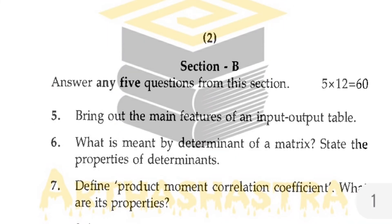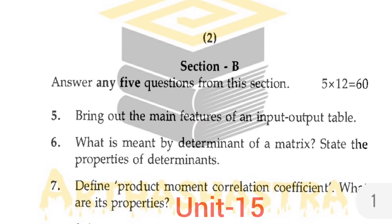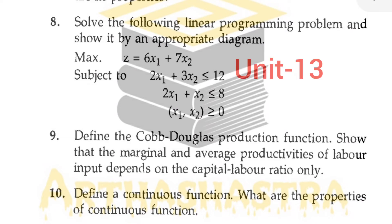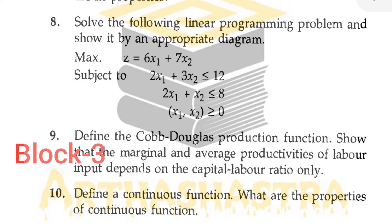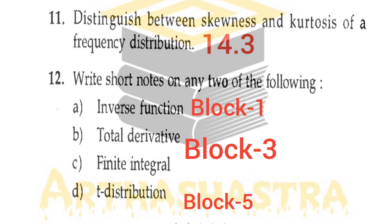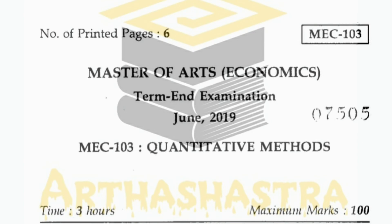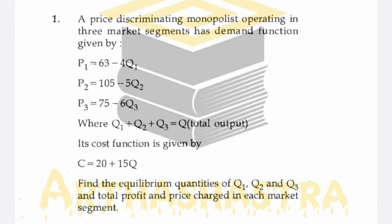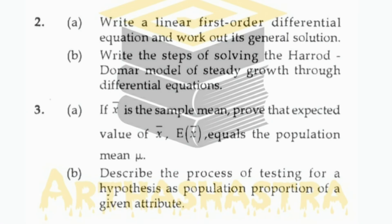Coming to Section B of December 2019. Question 5 is from Block 4, Unit 12, section 12.2. Question 6 is from Block 4, Unit 11, section 11.2. Question 7 is from Block 5, Unit 15, section 15.3. Question 8 is a numerical question from Unit 13. Question 9 can be found in Block 3, and question 10 in Block 1. Question 11 is from section 14.3. Question 12 containing 4 parts is asked from the blocks mentioned on screen. For the remaining questions you can bifurcate questions on the basis of blocks, units and sections in the similar way demonstrated.